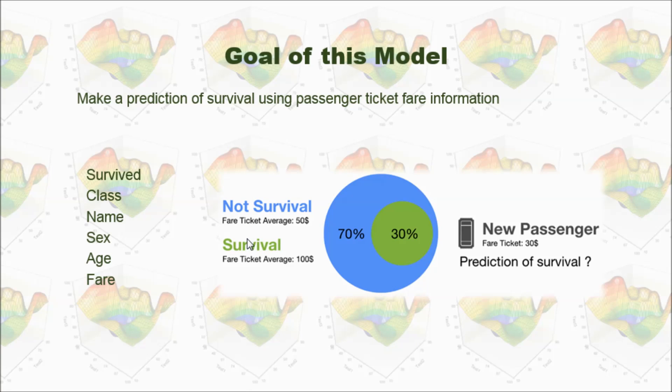So, in our data, we can calculate the average ticket price for not survival passengers, and our result is $50. And for the survival, we can also calculate the average ticket price is $100. Now, with this information, if the new passenger has a ticket with a price $30, will this passenger survive? Or the passenger cannot survive?